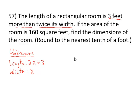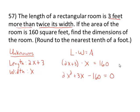The formula for area of a rectangle is length times width equals area. So here that's going to be (2x + 3) times x = 160. We'll distribute the x to get 2x² + 3x. And we'll subtract over the 160 simultaneously. Now we have our equation.